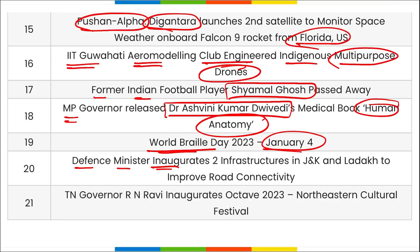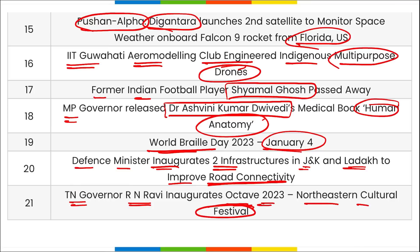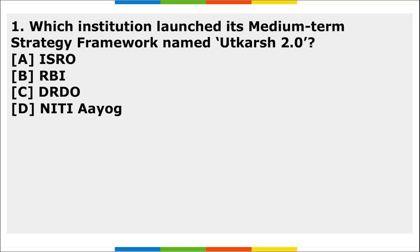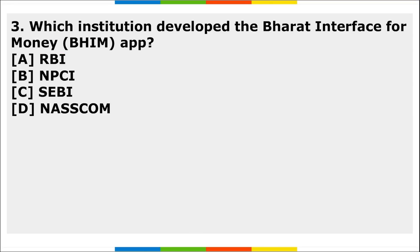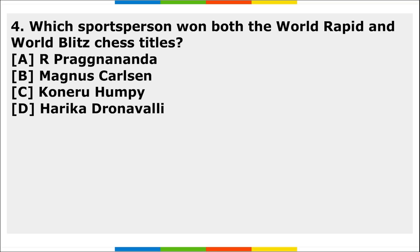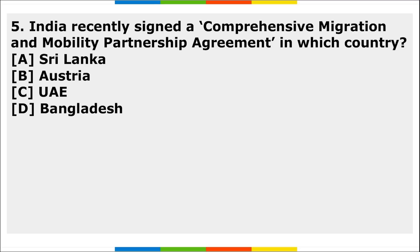Homework questions: (1) Which multinational company is behind the Second Future Engineer Program initiative? (2) Which institution developed the BHIM app (Bharat Interface for Money)? (3) Which sports person won both the World Rapid and World Blitz Chess titles? (4) With which country did India recently sign a Comprehensive Migration and Mobility Partnership Agreement?